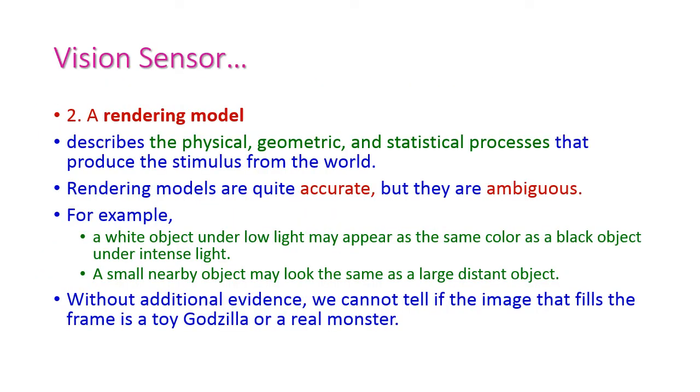The second one is rendering model. It is somewhat advanced from the object model which describes the physical, geometric, and statistical processes that produce the stimulus from the world. How the object looks in the environment is given by the rendering model. This model is very accurate, but they are ambiguous.